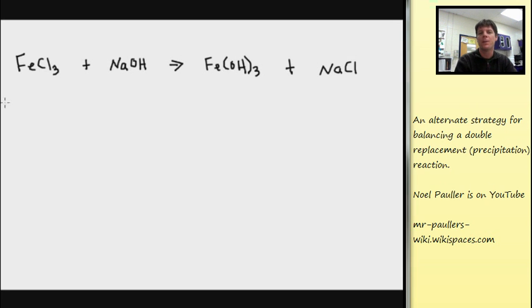Now let's look at a strategy for balancing this particular equation. This is a substitution strategy. So we have the formulas written for all the compounds. Iron 3 chloride, sodium hydroxide, iron 3 hydroxide, and sodium chloride.